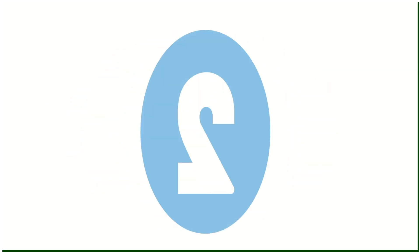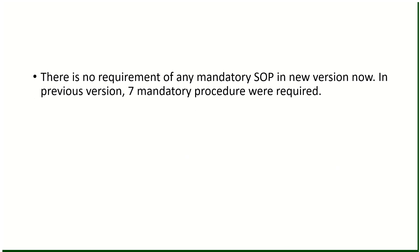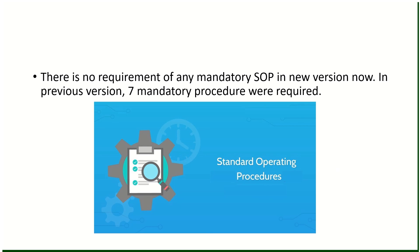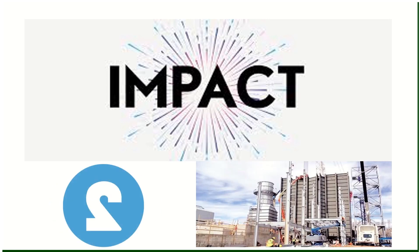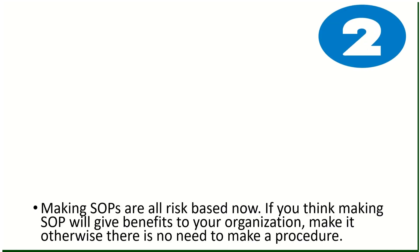Change number two: there is no requirement for any mandatory SOP in the new version. In the previous version, seven mandatory procedures were required. Making SOPs is now risk-based — if you think making an SOP will benefit your organization, make it; otherwise there is no need. Impact: no impact on industry. If you already have procedures from the previous version, keep them as they are.